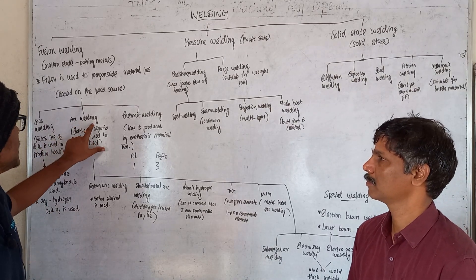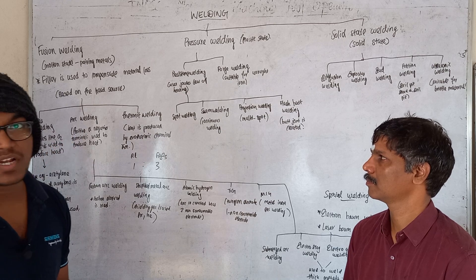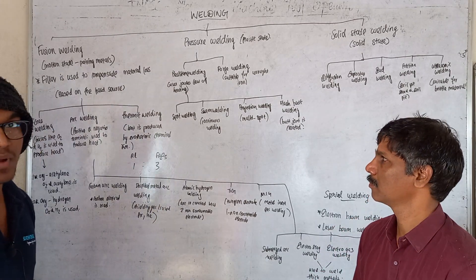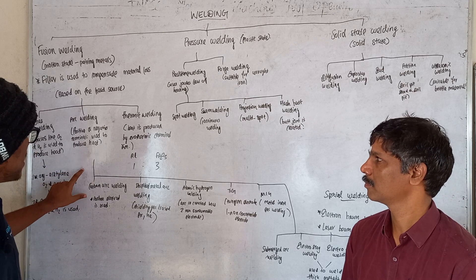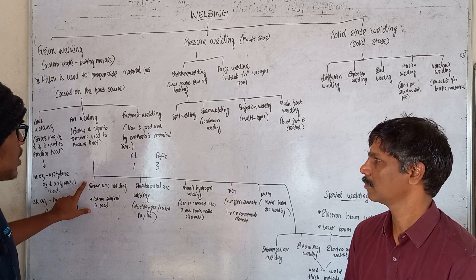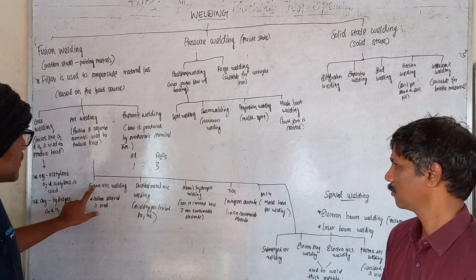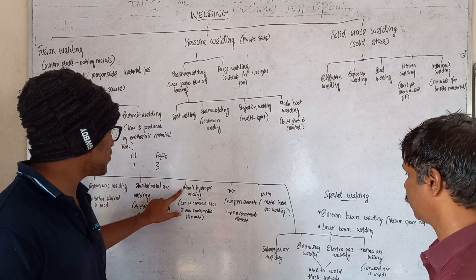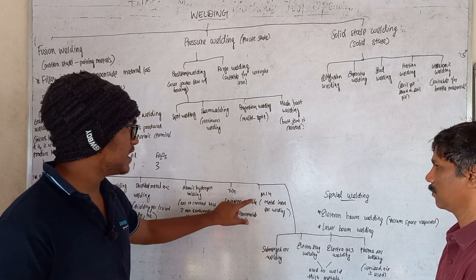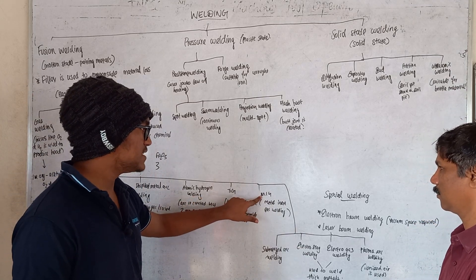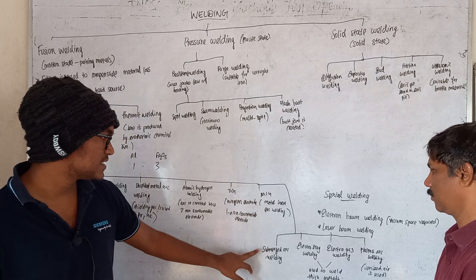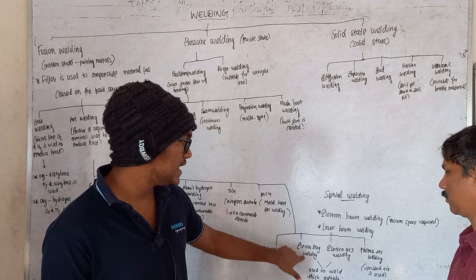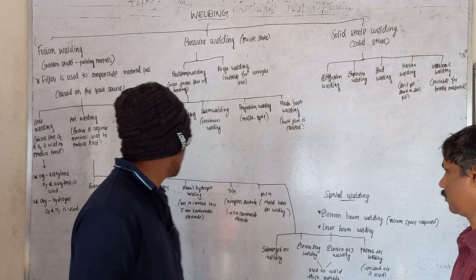When using arc welding, there are positive and negative terminals used in the welding process. Arc welding includes a broader class of types: carbon arc welding, shielded metal arc welding, atomic hydrogen welding, TIG welding, MIG welding, submerged arc welding, electro-slag welding, electro-gas welding, and plasma arc welding.